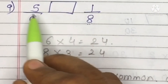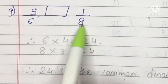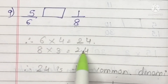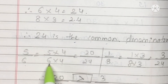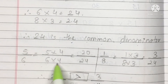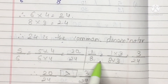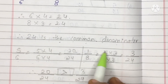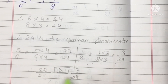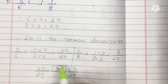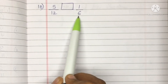Question 9: 5 upon 6 and 1 upon 8. Neither numerator nor denominator is common. We find a common denominator: 6 fours are 24 and 8 threes are 24, so 24 is the common denominator. Multiply 5 upon 6 by 4: 5 fours are 20, 6 fours are 24. Multiply 1 upon 8 by 3: 1 three is 3, 8 threes are 24. Now 20 upon 24 vs 3 upon 24 — 20 is greater than 3.